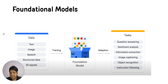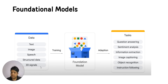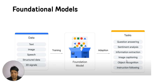The other part of Generative AI is foundational language models, such as ChatGPT. The underlying model is GPT-3, which was trained on conversational data and became GPT-3.5, more popularly known as ChatGPT. You train these foundational models on lots of data — text, image, speech, structured data, or 3D signals. By training on this data, they can perform a variety of tasks like question answering, sentiment analysis, information extraction, and image captioning.